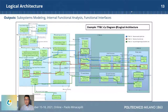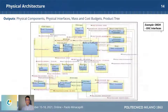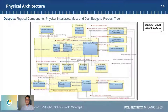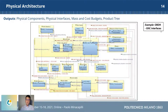Moving to the physical architecture, this is a very important step as it allows us to define the physical components that will constitute the system. Thanks to the concept of physical links, we were able to model physical interfaces between components, not only within subsystems but also between components from different subsystems. Mass and cost budgets were also developed using the mass and price viewpoints of Capella, and a final output was the product tree generation by Capella.